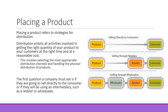We talked about pricing and product, now we're going to talk about placing that product. Placing a product refers to strategies for distribution. Distribution entails all activities involved in getting the right quantity of your product to your customers at the right time and at a reasonable cost. This involves selecting the most appropriate distribution channels and handling the physical distribution of products. The first question a company must ask is whether they're going to sell directly to the consumer or use an intermediary such as a retailer or wholesaler.